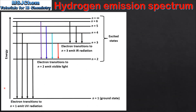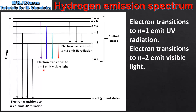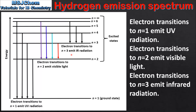We'll end the video by looking at the complete emission spectrum for the hydrogen atom. This includes electron transitions to n equals 1, n equals 2, and n equals 3. Starting with electron transitions from higher energy levels to n equals 1, which emit UV radiation — these electron transitions emit the greatest amount of energy. Next we have electron transitions to n equals 2 which emit visible light. And finally we have electron transitions to n equals 3 which emit infrared radiation, the lowest energy of the three. To summarize: electron transitions to n equals 1 emit photons corresponding to UV radiation, electron transitions to n equals 2 emit photons corresponding to visible light, and electron transitions to n equals 3 emit photons corresponding to infrared radiation.